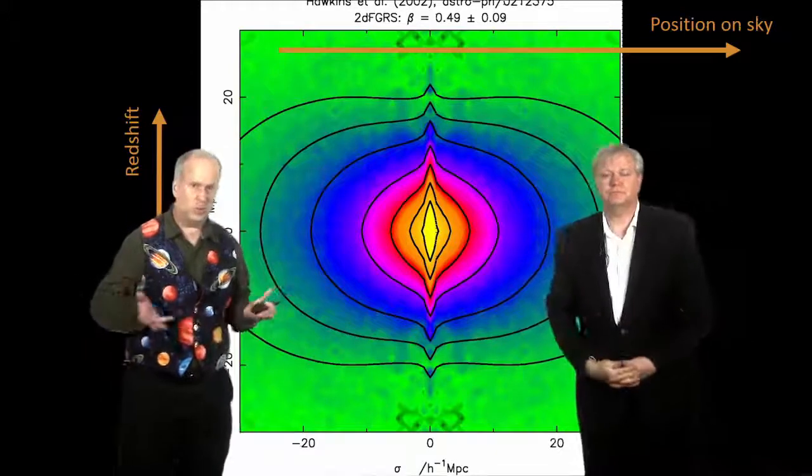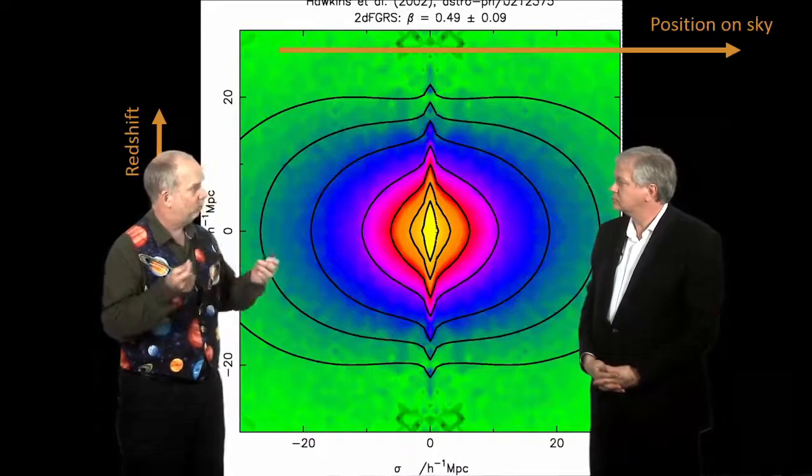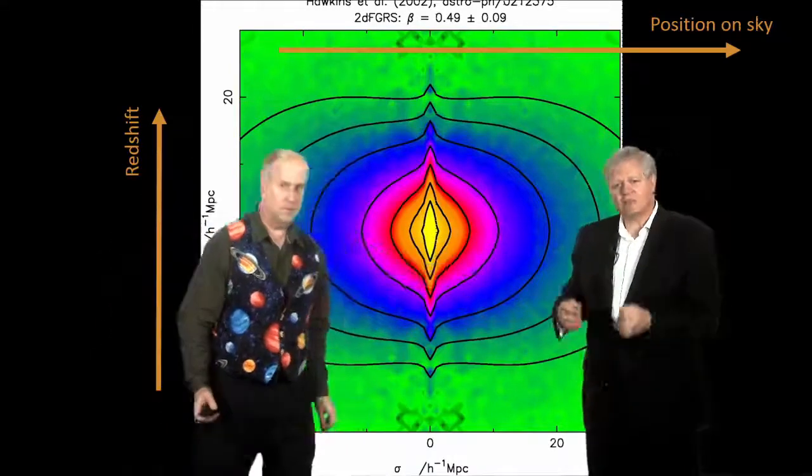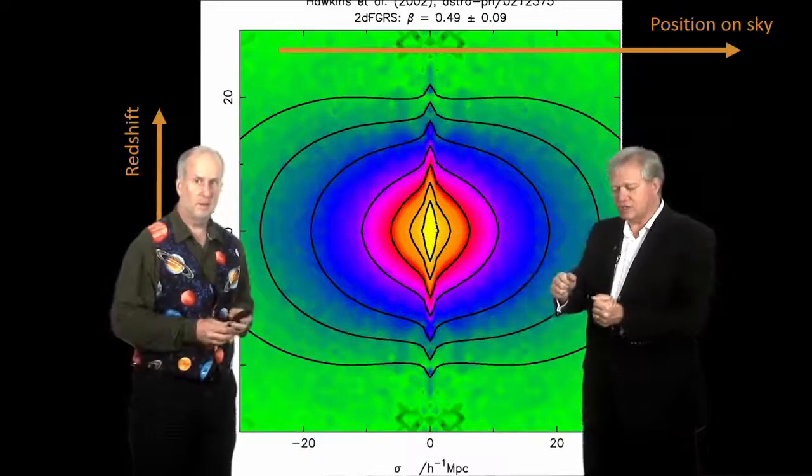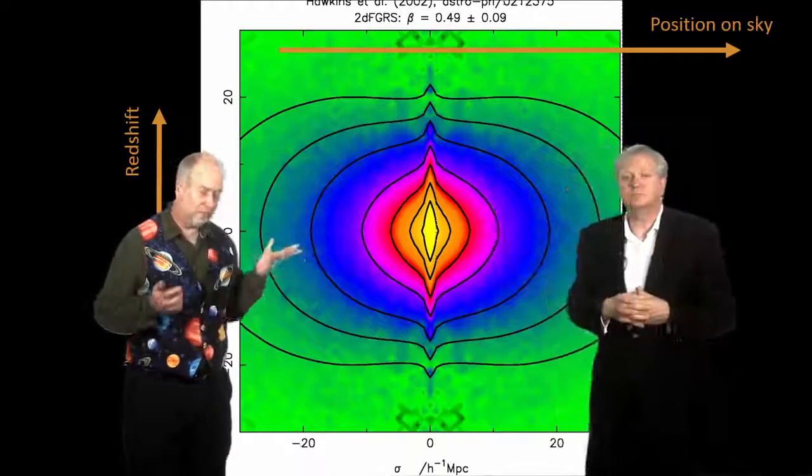Now, if galaxies were just distributed randomly, there'd be no more chance of seeing galaxies close to each other than far away. So, this diagram would just look an absolutely uniform shade of color. That is, the average difference in redshift and the average distance in separation on the sky would be the same.